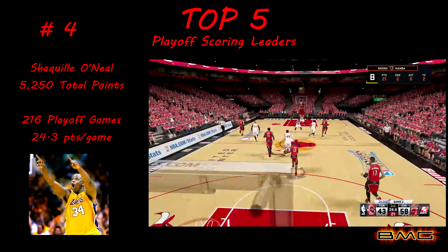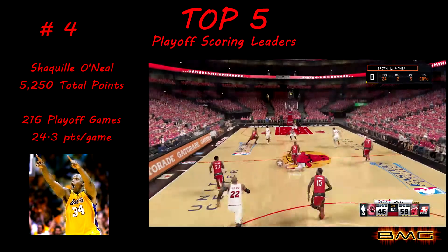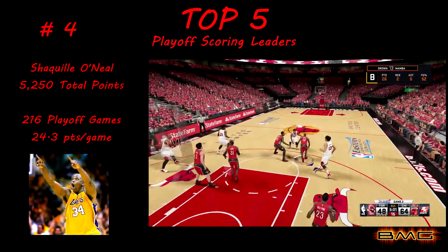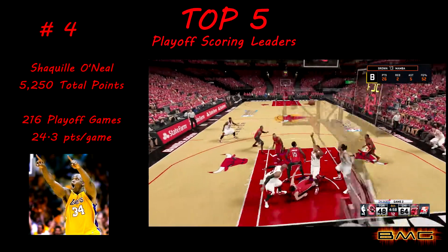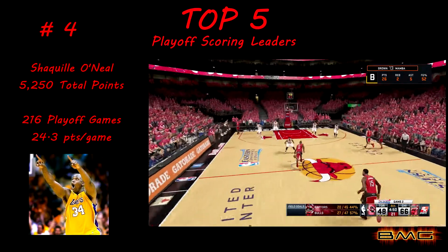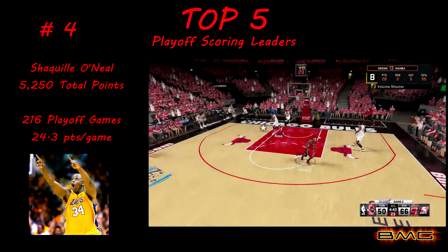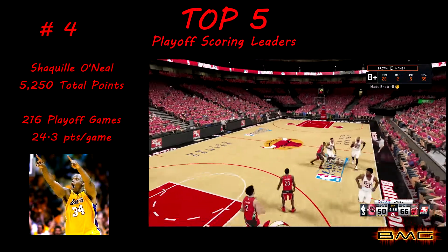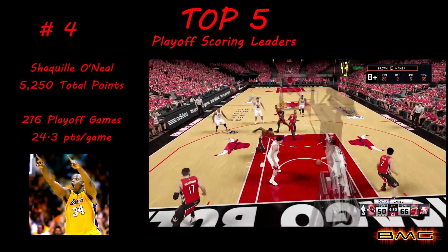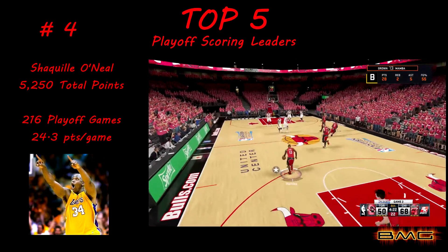Coming in at number four it's the Big Diesel, Shaquille O'Neal. He scored 5,250 points in 216 games, which comes out to about 24.3 points per game. He didn't hit any threes. Shaq was an unstoppable tank — no one could stop him in the post. I'm a little surprised his average is kind of low for the playoffs; I thought it'd be higher, but 24 points is pretty good. Also worth noting, Tim Duncan only played for San Antonio while Shaq played for the Orlando Magic, Lakers, Miami Heat, Phoenix Suns, Cavs, and Boston.